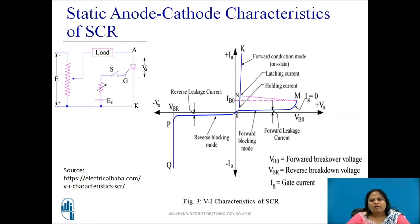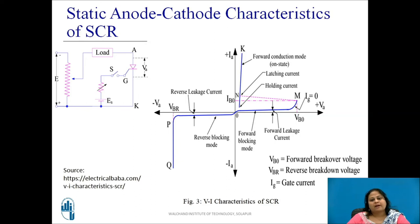The inner two layers of the SCR are lightly doped compared to the outer layers. Thus, the thickness of the depletion layer at junction J2 during forward bias condition is greater than the total thickness of the two depletion layers at J1 and J3 when they are reverse biased. Due to this, the forward break over voltage VBO is generally higher than the reverse breakdown voltage VBR.